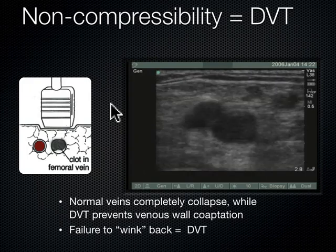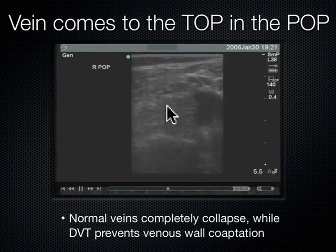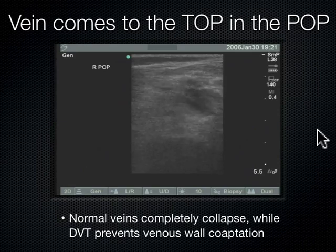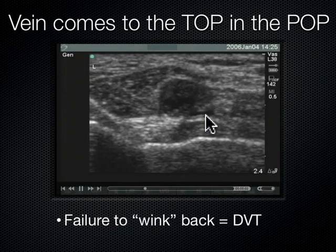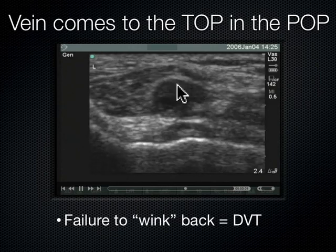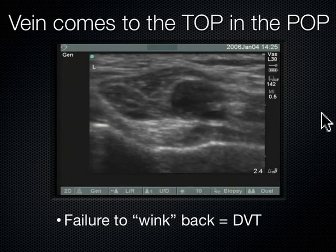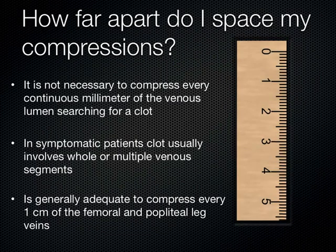Here we are in the pop — remember the vein comes to the top in the pop. Here's the popliteal vein up here, popliteal artery, and the vein is easily compressible with no clot. This is what it looks like when there is a clot — popliteal artery, we're pushing so hard the artery is actually winking at us. This is the popliteal vein, very dilated with echogenic thrombus in it. How far apart do you space compressions? Clots usually involve multiple whole venous segments, so it's adequate to go every one centimeter between compressions.